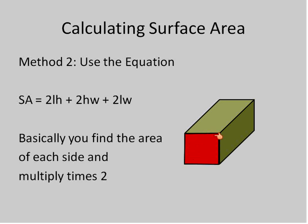So you find the area here of the length times the width and you multiply it times two because it's in the front and also in the back. You find the area of the top and you multiply it times two because it's in the top and the bottom. You find the area of the side and you multiply it times two because it's on the left and also on the right. So that's the reasoning behind this equation.